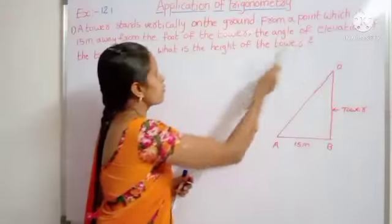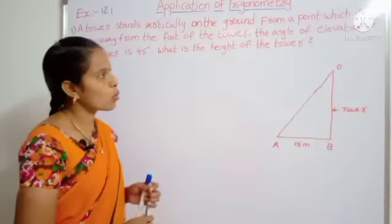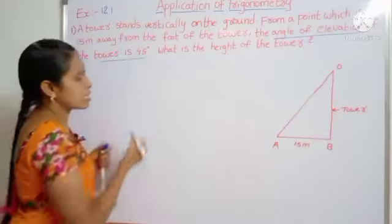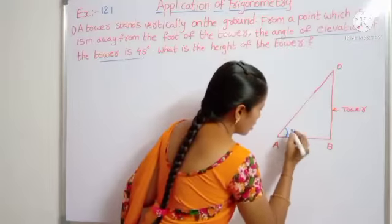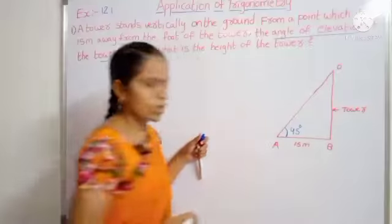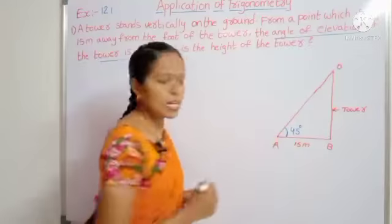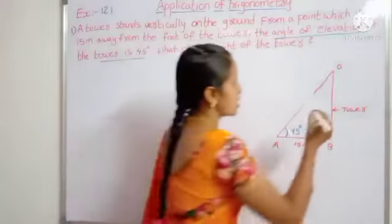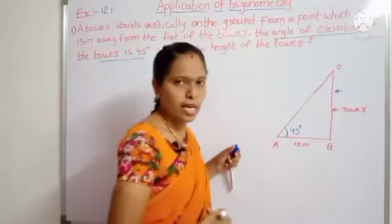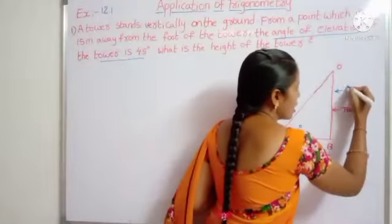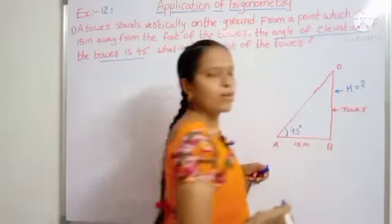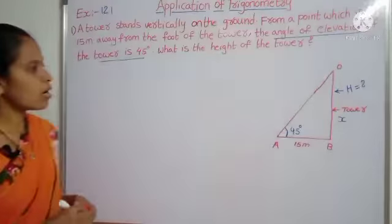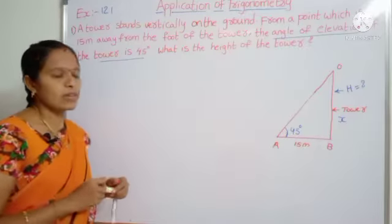Now form a triangle A, B, O. The angle of elevation of the tower is 45 degrees. Given: angle of elevation equals 45 degrees. What is the height of the tower? We need to find out the height. We don't know the height, so I am taking OB equal to X.